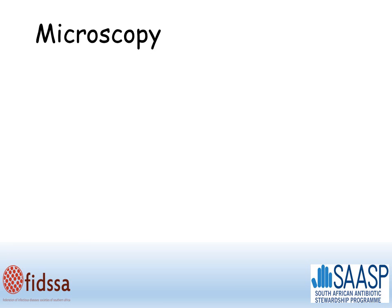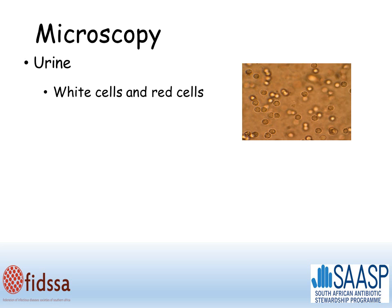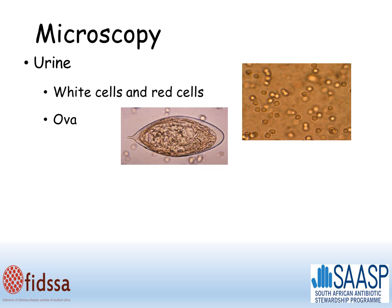Microscopy is usually the first test performed on many specimens when they reach the laboratory. The information you can get from microscopy can be extremely important, but unfortunately it's often overlooked. Take for example urine, which is usually looked at under the microscope first. You may see white cells or red cells, and the absence of these is also important, as seen on this slide. You might also see eggs or ova, such as this schistosomiasis egg.